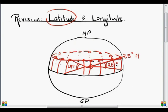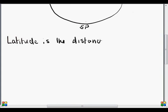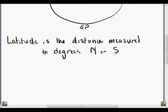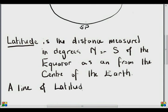A line of latitude. So a line of latitude and latitude are two completely different things. We can look at this in terms of a definition. Latitude is a distance measured in degrees north or south of the equator as an angle from the centre of the Earth. That is latitude. A line of latitude joins all places the same distance north or south of the equator.